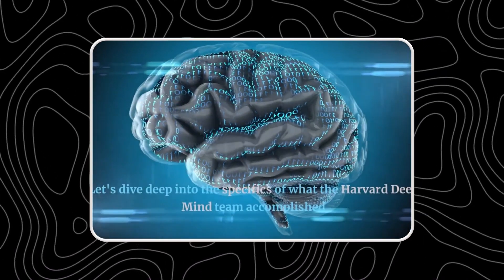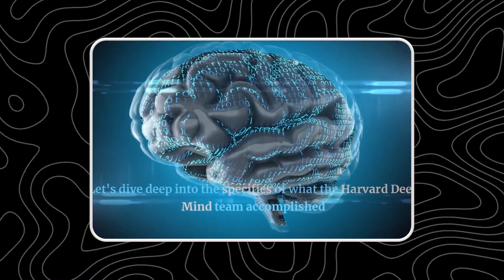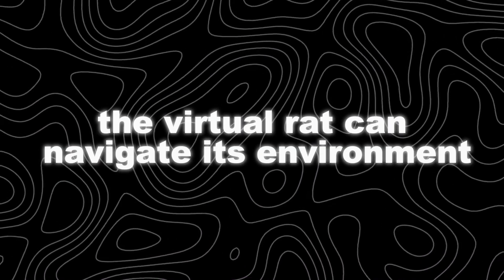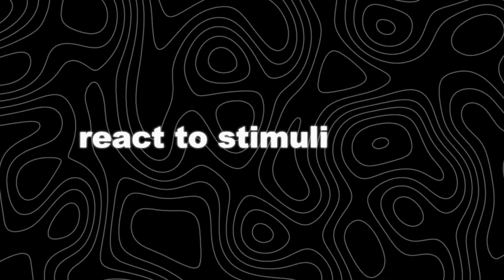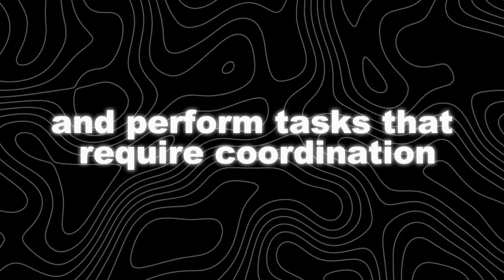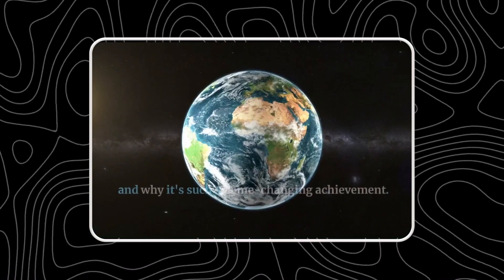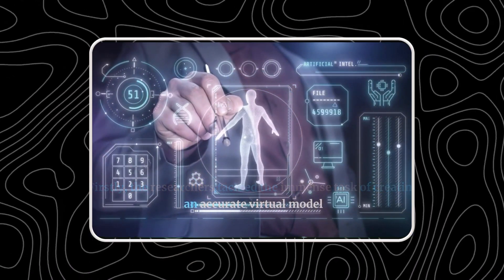The artificial brain mimics the structure and function of a real rat's brain. In the simulation, the virtual rat can navigate its environment, react to stimuli, and perform tasks that require coordination and decision-making.